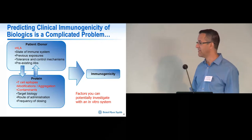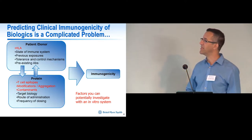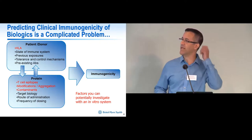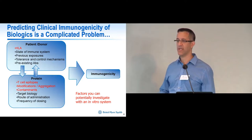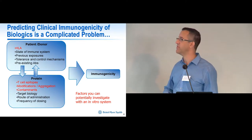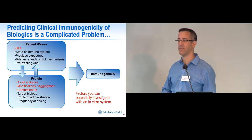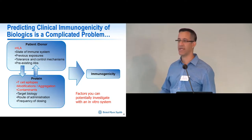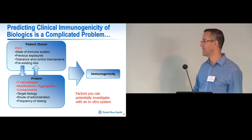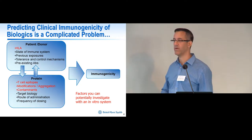Immunogenicity is a very complicated story with many different risk factors related to the patient and to the protein, and unfortunately not all of these can be addressed in an in vitro system. Patient-related factors include HLA — the proteins that present different peptides to your immune system — as well as immune system status, previous exposures, and pre-existing antibodies. Protein-related factors include the presence of T cell epitopes or foreign sequences, modifications, aggregations, contaminants like host cell proteins, target biology, route of administration, and frequency of dosing. All these factors can play a role in whether immunogenicity develops.